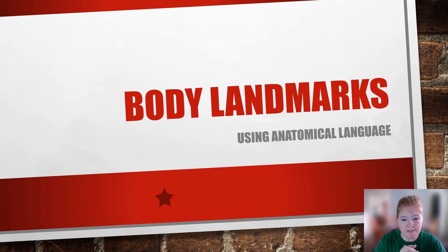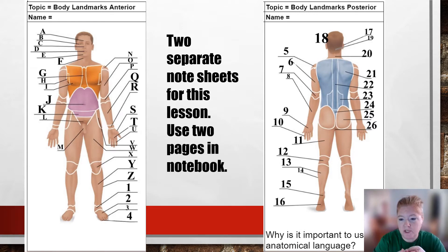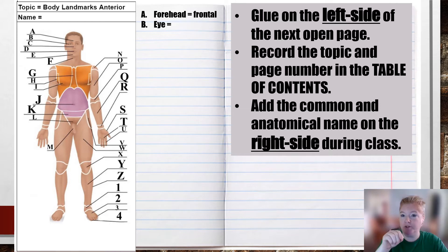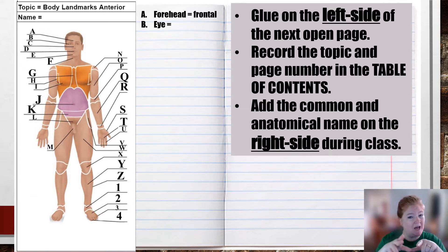Let's talk about body landmarks. We're using anatomical language, and it's important for the process to use the same language, so you should get used to using these instead of terms you are probably familiar with already. We have two note sheets for this one — an anterior and a posterior note sheet — so this will require two pages in the notebook. You're going to write the letter or number, then put the anatomical term and the common name. It may be easier to label the common names first and then put in the anatomical names.